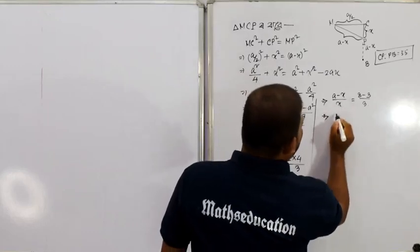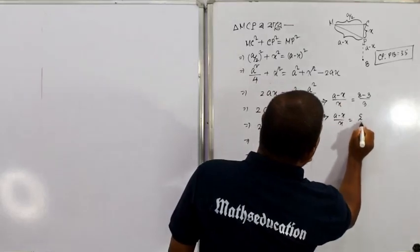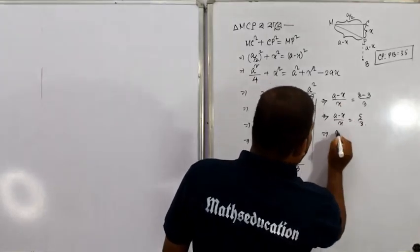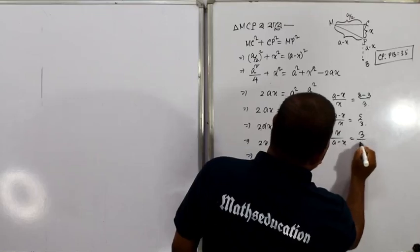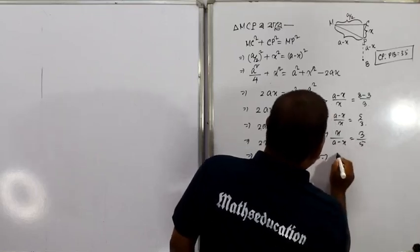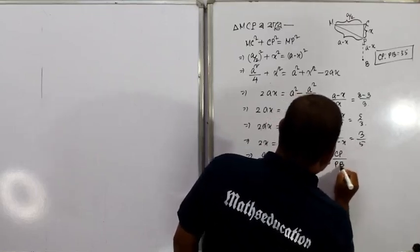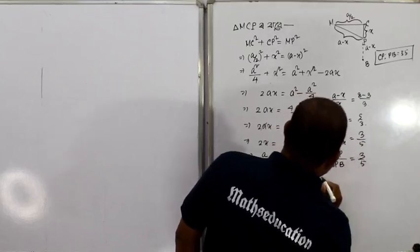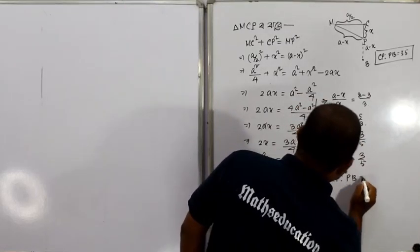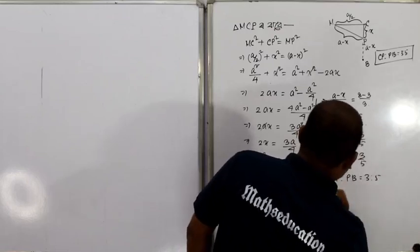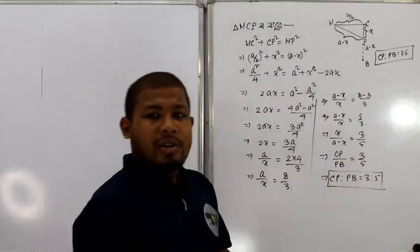a minus x divided by x equal to 5 divided by 3. x divided by a minus x equal to 3 divided by 5. x means CP, a minus x means PB — 3 divided by 5. CP is to PB equal to 3 is to 5. That was the ratio — so now we have it.